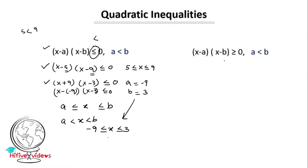Now for x minus a into x minus b greater than or equal to 0, where a is less than b, the solution region changes. Let's take the example: x minus 4 into x minus 16 greater than or equal to 0. Here a is 4 and b is 16.